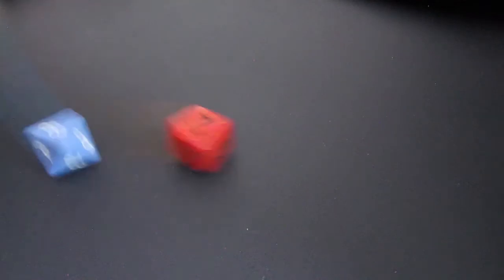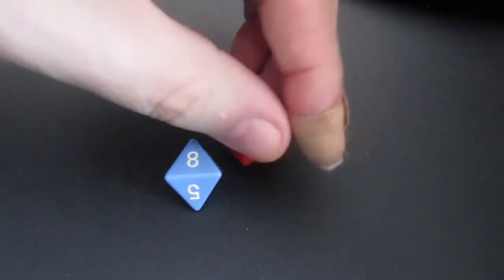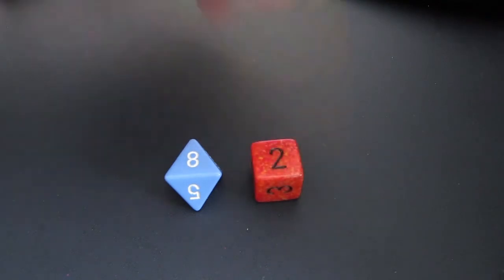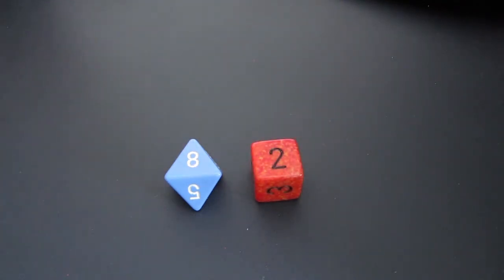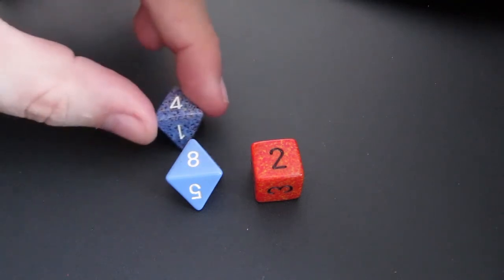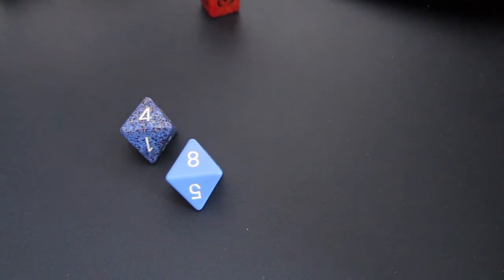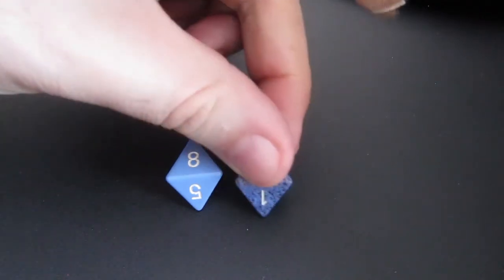Here I've rolled a d8 trait die and the d6 wild die. An 8 came up for the d8, its maximum value. So it aces and I roll another d8, adding it to the original score of 8. This leaves me with either a 2 on the wild die or a 12 on the trait die. My final roll total is 12.